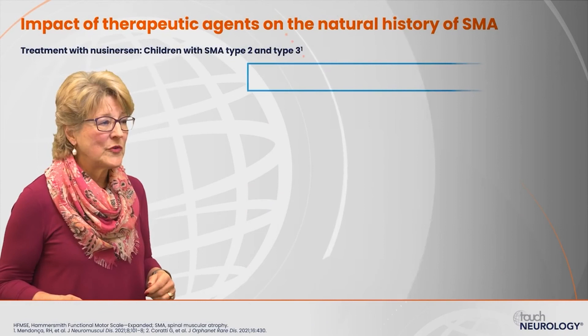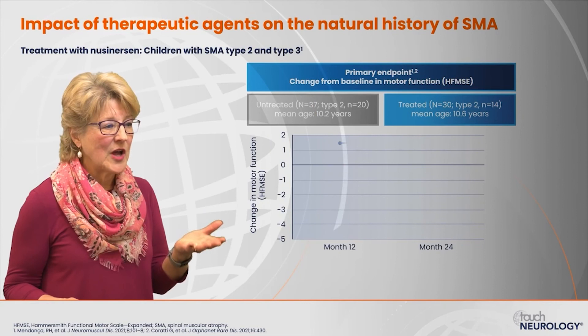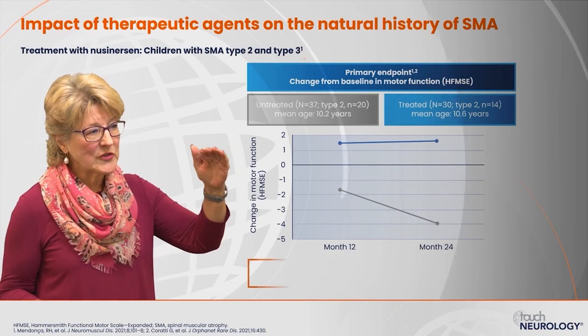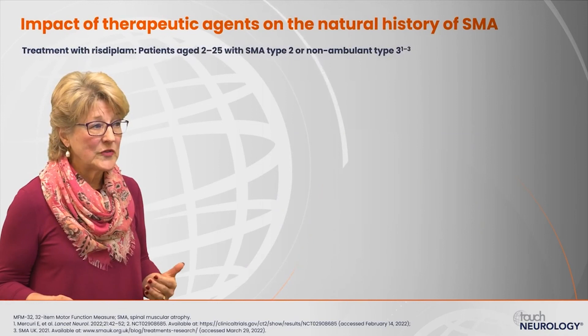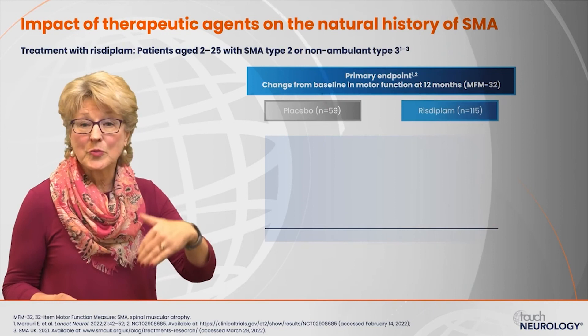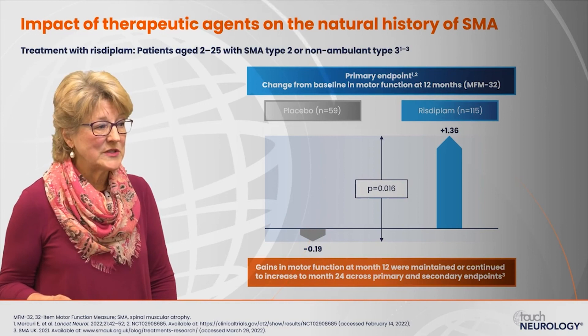When treating type 2 and type 3 patients with nusinersen, nusinersen minimized the loss of motor function based on the Hammersmith motor function scale — there is stabilization and perhaps some improvement compared to the natural history of decline. For risdiplam in patients aged 2 to 25 with SMA type 2 or seated type 3, placebo patients had a decline in function whereas patients treated with risdiplam had an improvement. Gains in motor function at month 12 were maintained or continued to increase to month 24 on both primary and secondary endpoints.